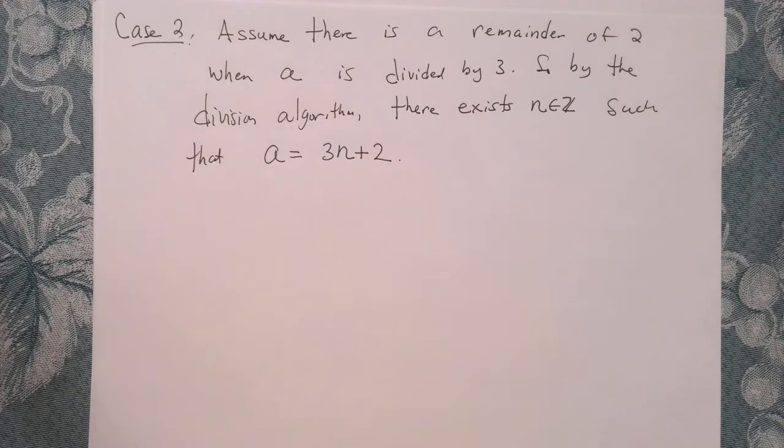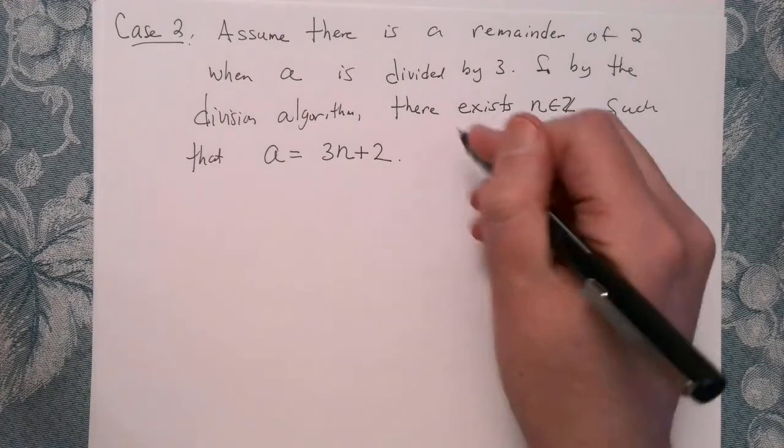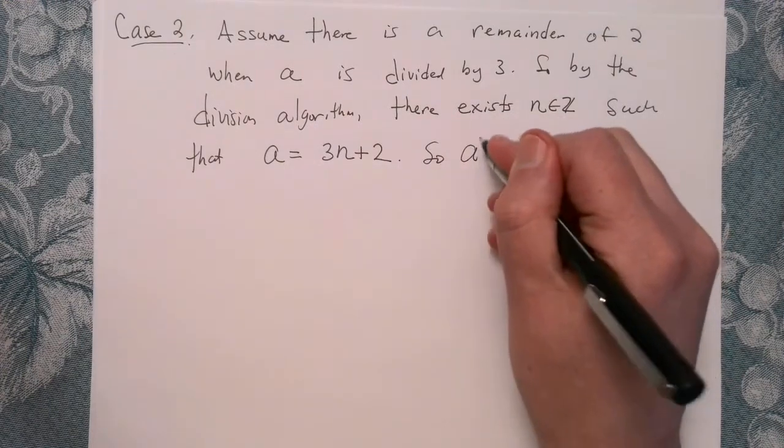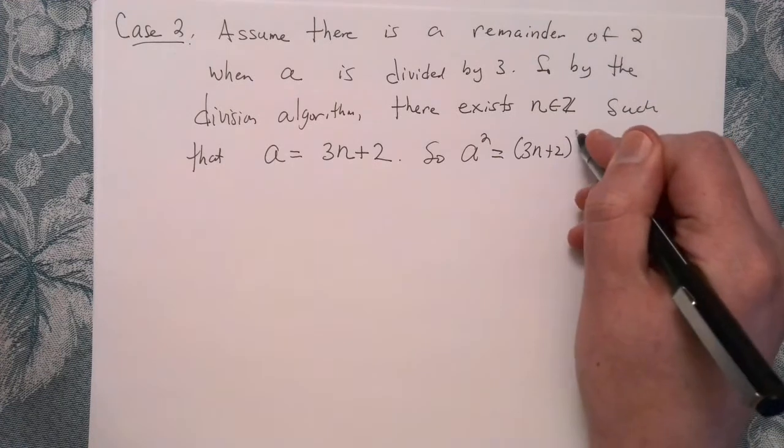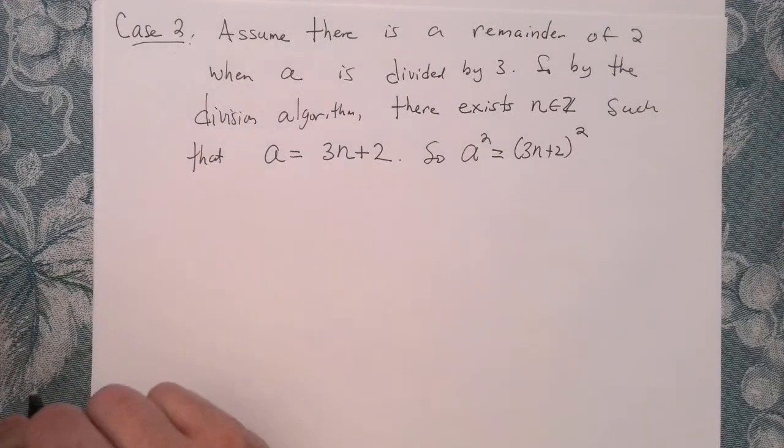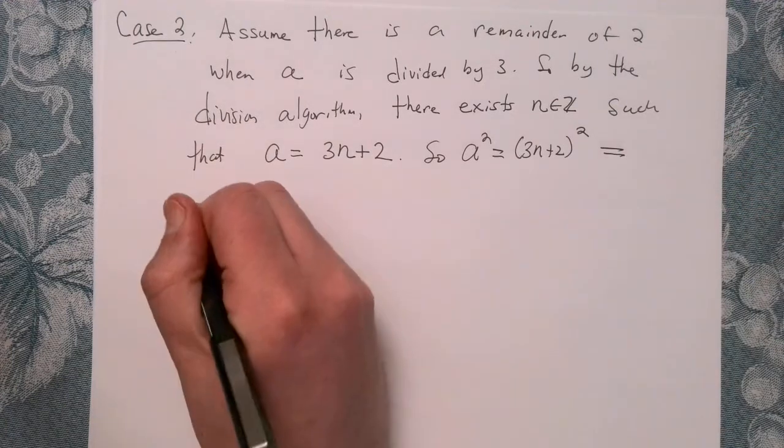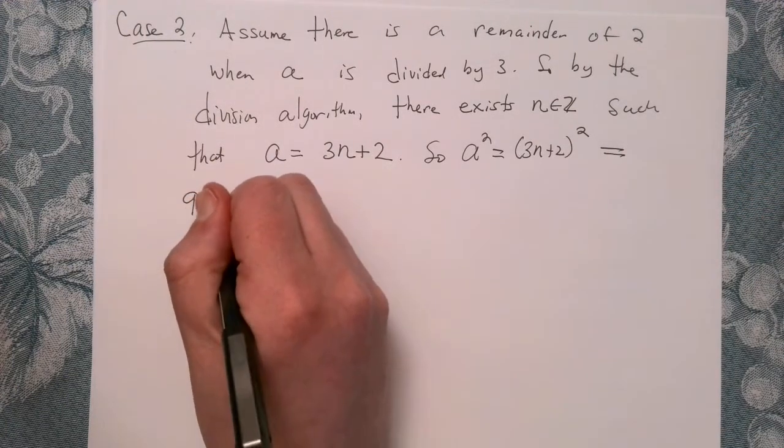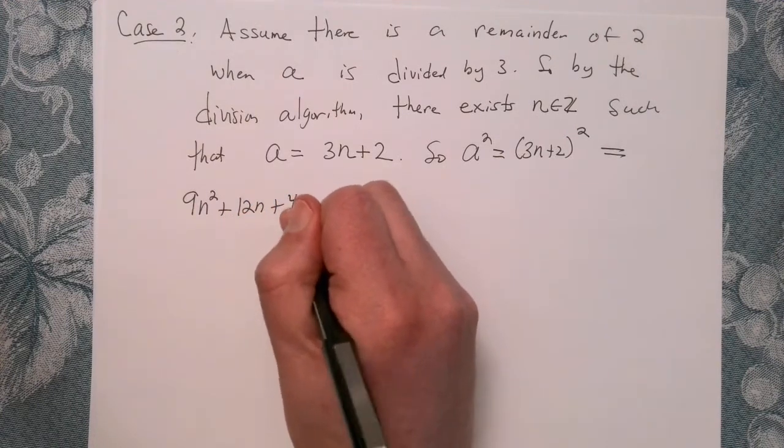Okay, and then we're going to do the same thing. Remember, our goal is we want to show that 3 doesn't divide A squared. So we're going to compute A squared and show exactly that. And so A squared is exactly 3n plus 2 quantity squared. And that is equal to 9n squared plus 12n plus 4.